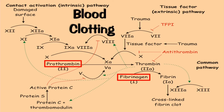This is a highly regulated process, and it needs to be, because all the components necessary to make a clot are there in your bloodstream. If there's an error or problem in this process — if it wasn't self-limiting or regulated the way it is — your blood could just all harden up.